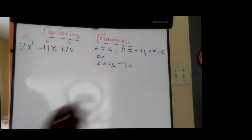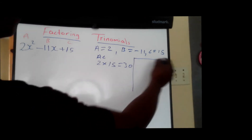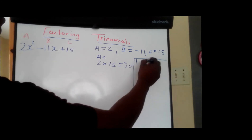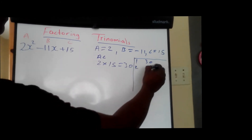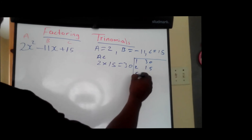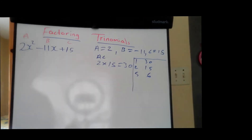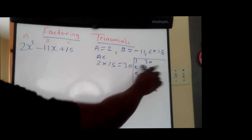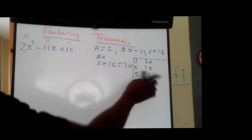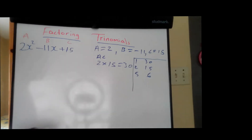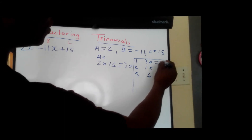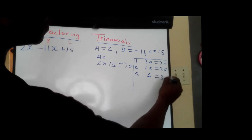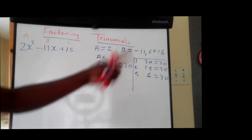We know that 2 times 15 is 30. But we need to find the factors of 30. So we can write 1 and 30, 2 and 15, 5 and 6. So 1 times 30 gives 30, 2 times 15 gives 30, and 6 times 5 is 30. These are factors of 30.